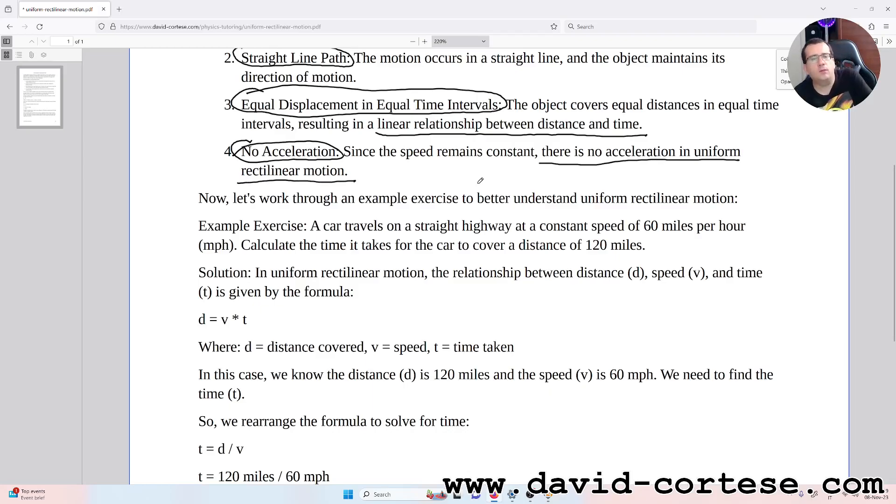Now let's walk through an example exercise to better understand uniform rectilinear motion. A car travels on a straight highway at a constant speed of 60 mph. Calculate the time it takes for the car to cover a distance of 120 miles.